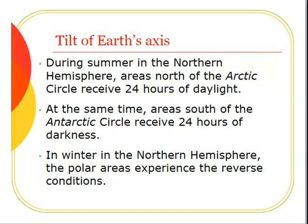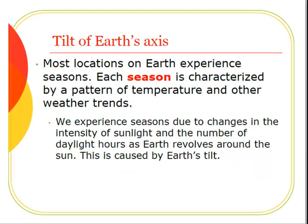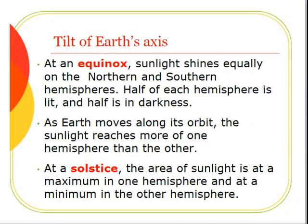In winter in the Northern Hemisphere, the polar areas experience the reverse conditions. Here's a picture of Earth showing the angles of degrees and the different ways that Earth is tilted and the way the Sun is coming onto the Earth at different parts of the year. Most locations on Earth experience seasons. Each season is characterized by a pattern of temperature and other weather trends. We experience seasons due to changes in the intensity of sunlight and the number of daylight hours as Earth revolves around the Sun. This is caused by Earth's tilt.